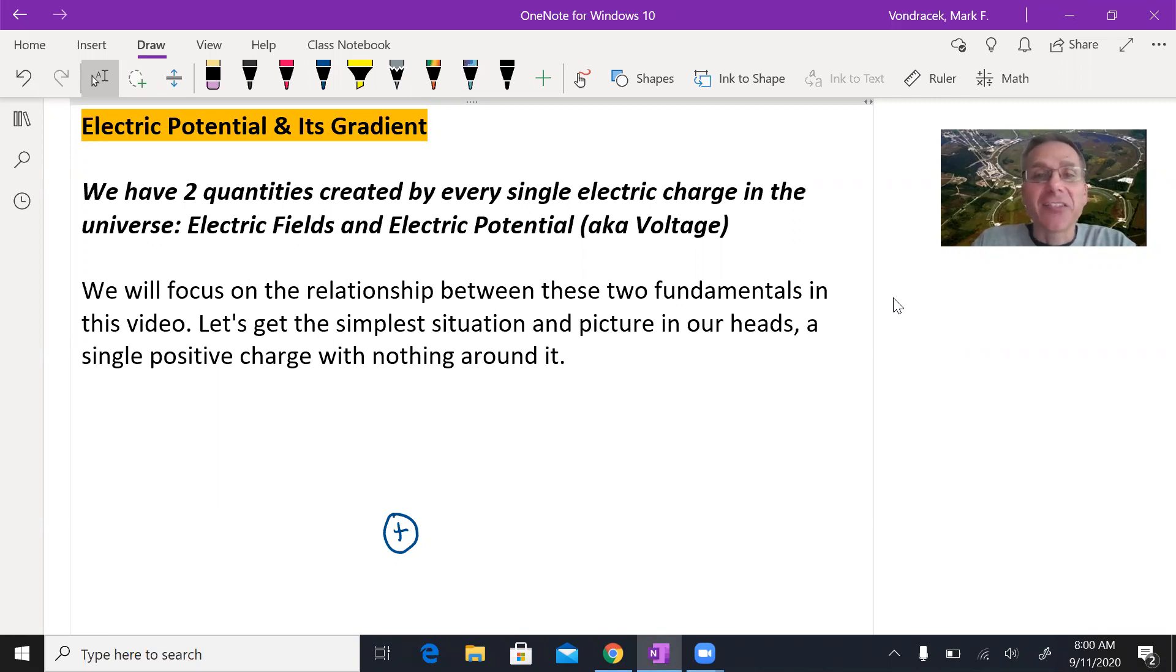Electric potential is a quantity, along with electric fields, that all electric charges produce. Every electron, every proton, anything you rub with fur and make your hair stand up—anything that has a net charge is producing electric fields and voltage in the space around it.